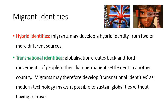You can also have transnational identities. Globalisation creates back-and-forth movements of people rather than permanent settlement in another country. It's not unusual today for people to move across multiple countries — someone might work in one country and fly home at the weekend, or work in different countries in a rolling process. As a result, migrants may adopt a transnational identity — a mixture of many different identities and none at the same time. Modern technology also makes it possible to sustain global ties without travelling, through email, instant messaging, FaceTime or Skype, which affects and changes an individual's sense of identity, making them feel transient — rooted not in one place but in many.